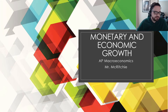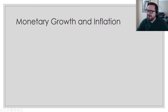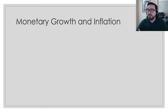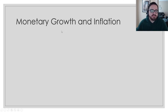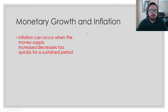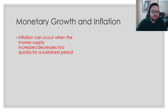Monetary and economic growth. First things first, let's talk about monetary growth — namely changes in the money supply and how that affects inflation. A very common thing we say in the real world is that when you print more money, it makes prices go up. The basic explanation is that the more money exists, the less valuable it becomes. As a baseline concept, inflation can occur when the money supply increases or decreases too fast for a sustained period of time.